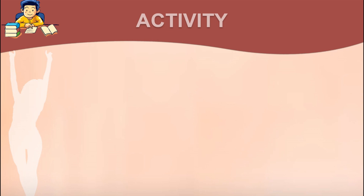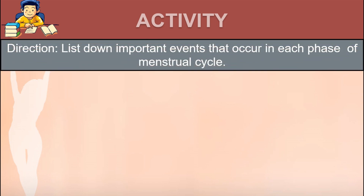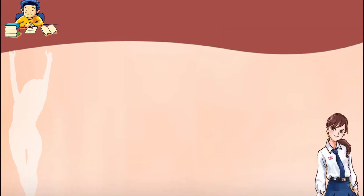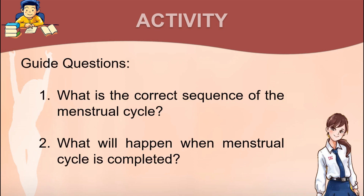Now let's have the activity. You can get your notebook or any clean sheet of paper and write your answers on it. You will be given 5 minutes to answer the activity; you can pause the video while answering. Direction: List down important events that occur in each phase of the menstrual cycle. Also answer the guide questions: 1. What is the correct sequence of the menstrual cycle? 2. What will happen when the menstrual cycle is completed?